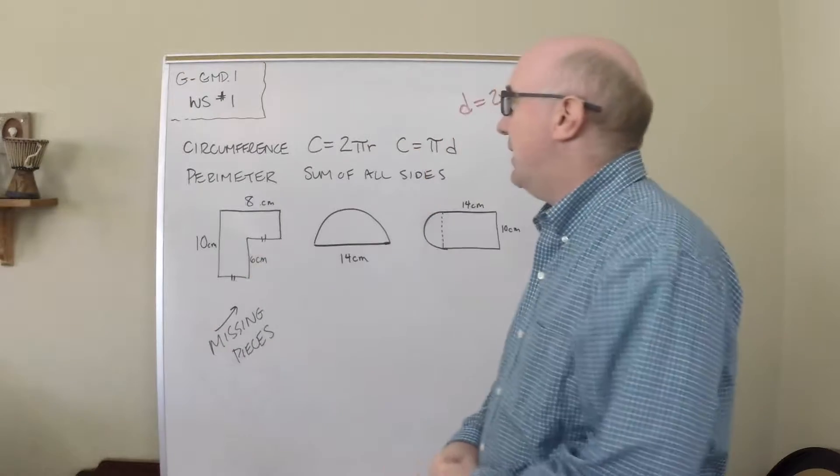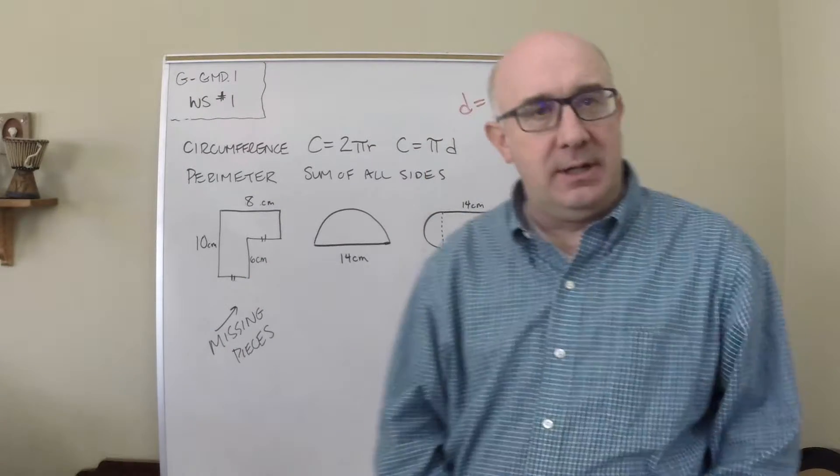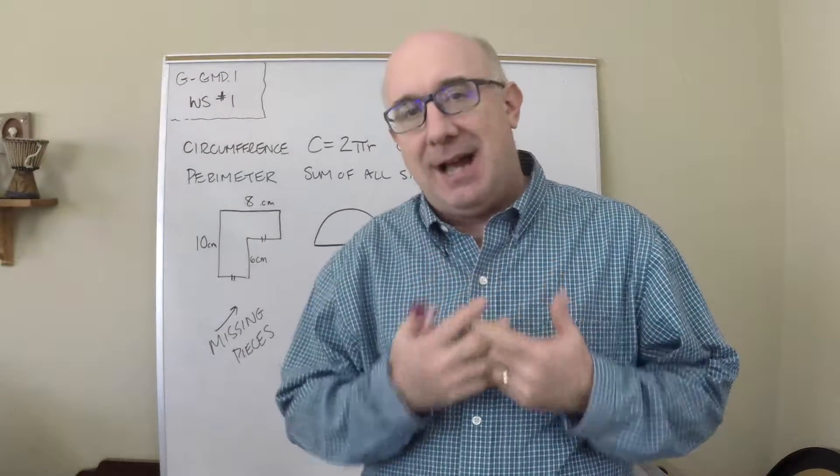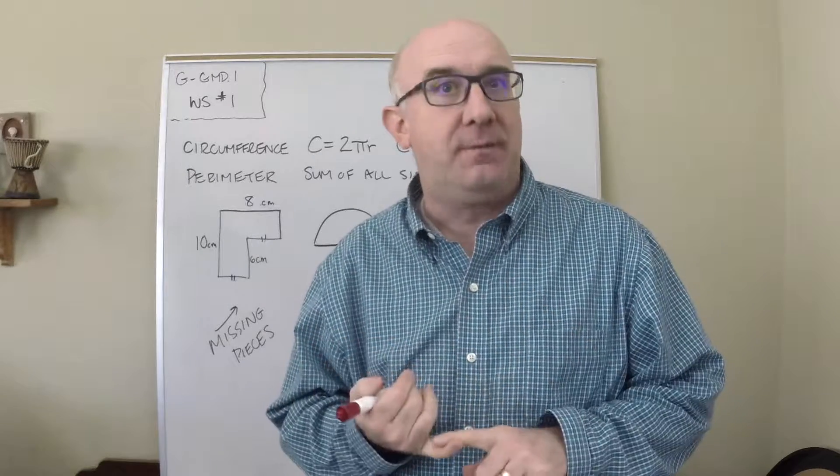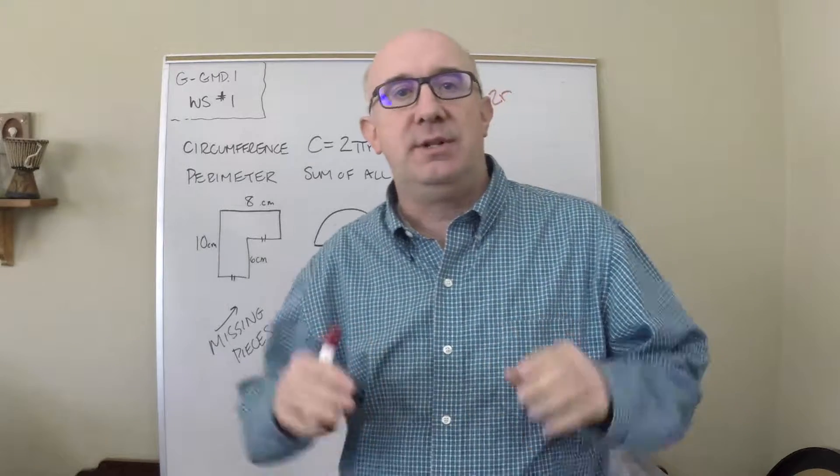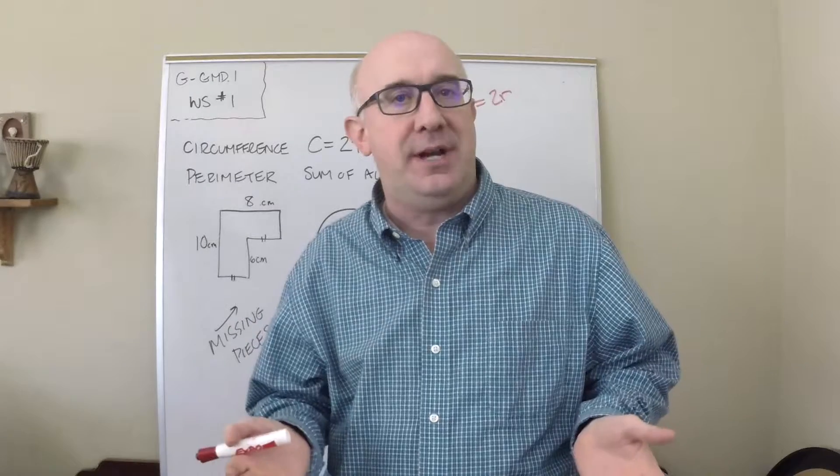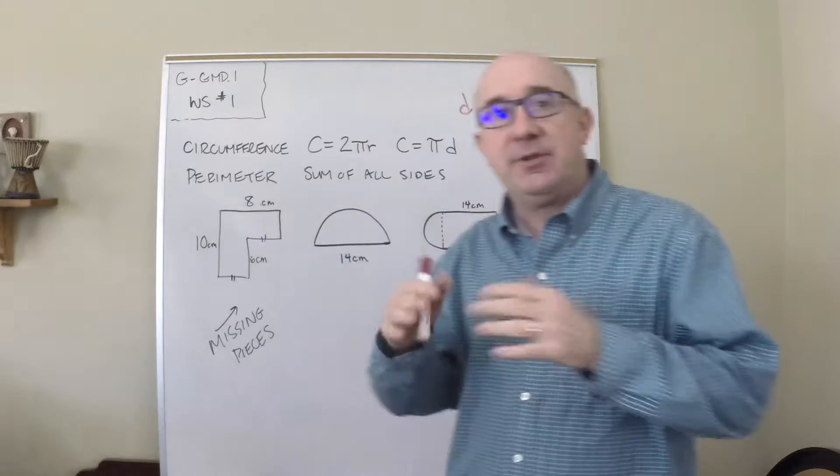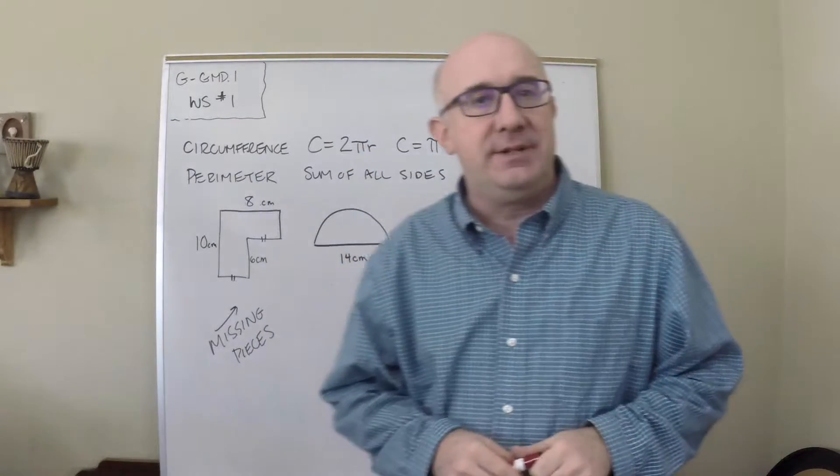All right, let's take a look at worksheet number one. Worksheet number one outlines the very basics of circumference and perimeter—in other words, the distance around a shape. Circumference means around the circle, and perimeter means around the polygon.